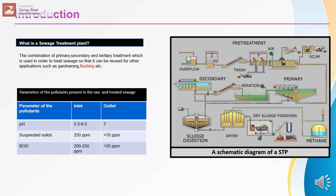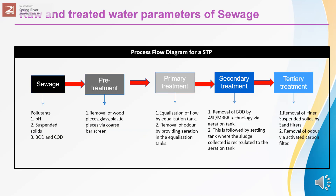Sewage also constitutes very large particles like wood particles, plastic particles, etc. These are initially screened off. Then the flow enters the secondary treatment system wherein BOD is removed. Then it continues to the clarifier where the sludge settles down and the clarified water is pumped to the tertiary treatment system, wherein the fine suspended particles are removed. The combination of preliminary, primary, secondary, and tertiary treatment systems is used to treat sewage so that it can be reused for other applications.